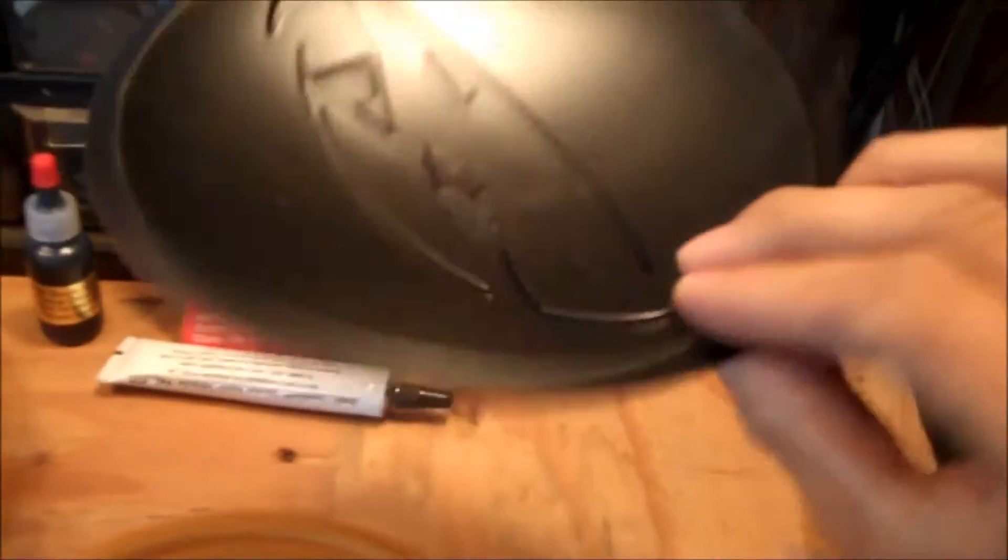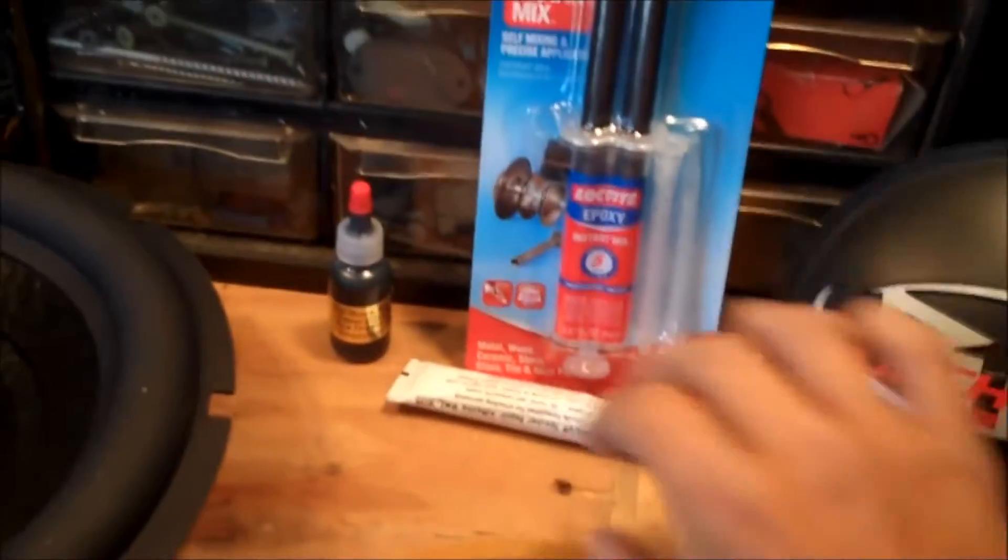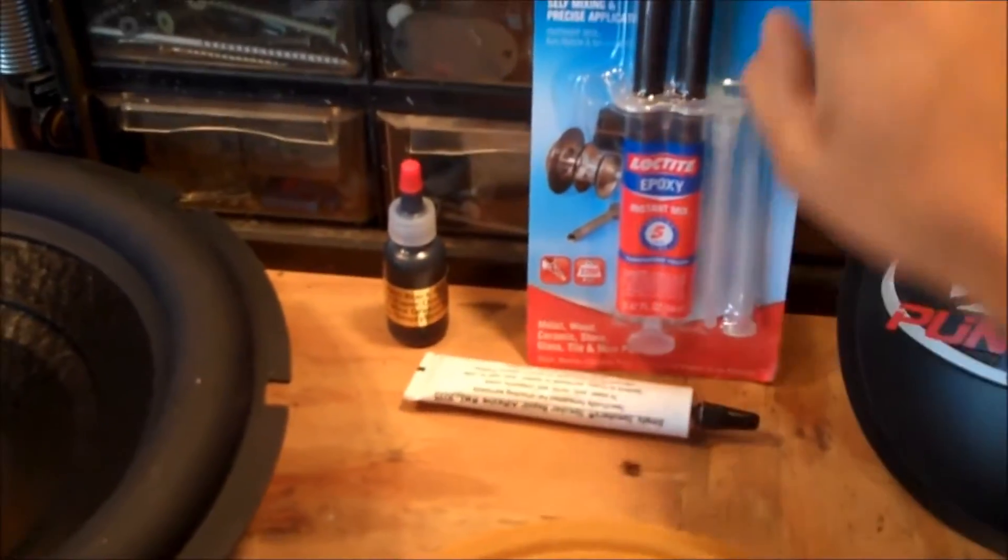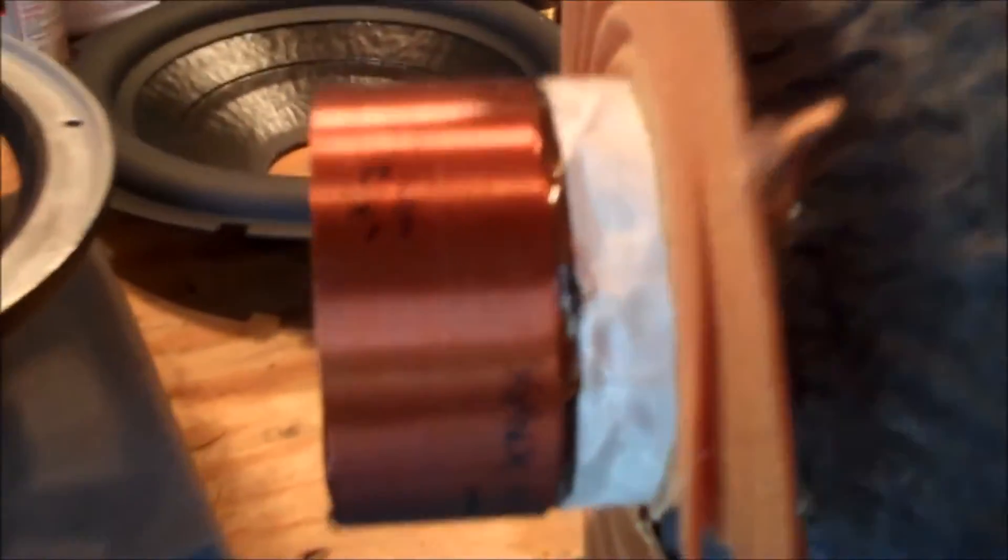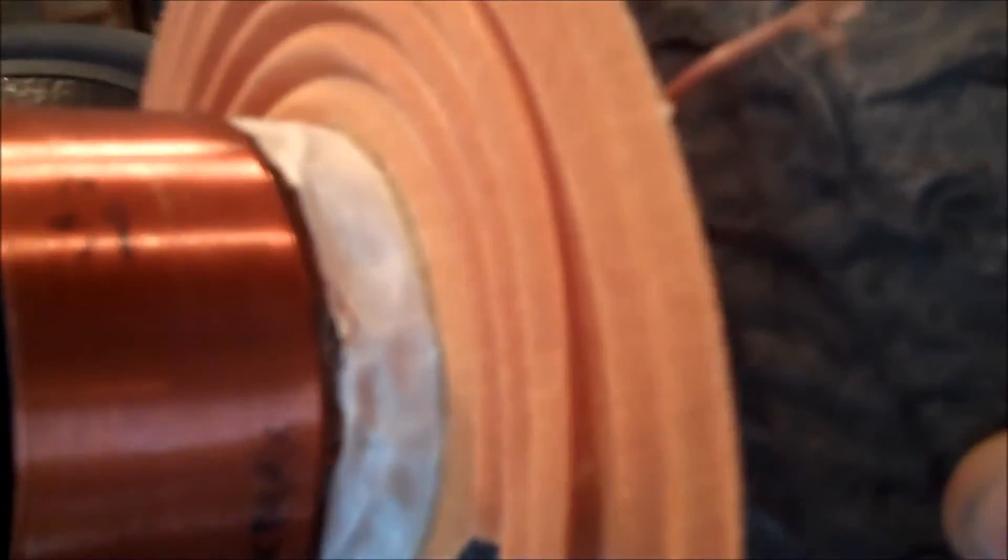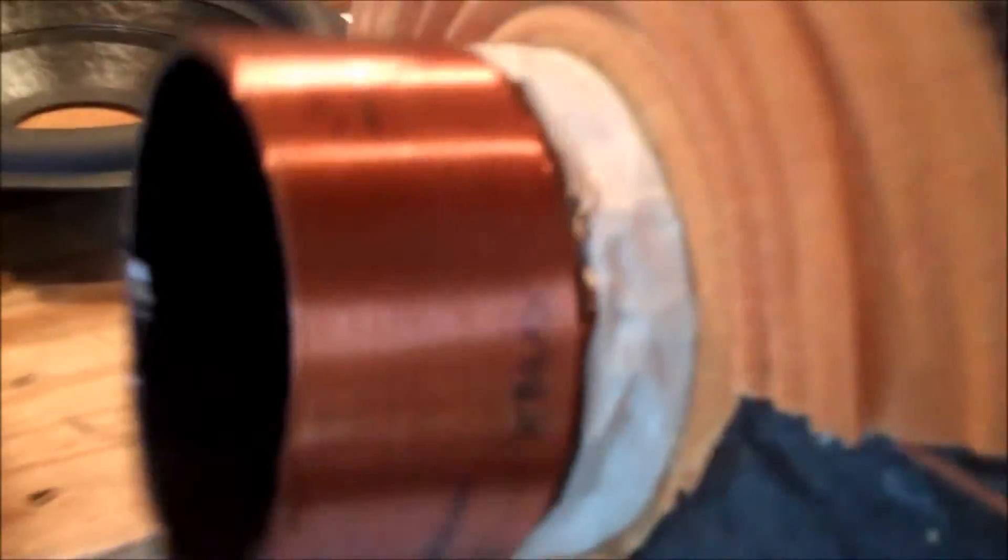We're going to use the original dust cap, and here's some adhesive I picked up off of eBay. We're going to take the original cone and spider assembly and measure the distance between the top of the coil and the spider so we can get the spider placed correctly. I think it was 18 millimeters. I'm going to double check.